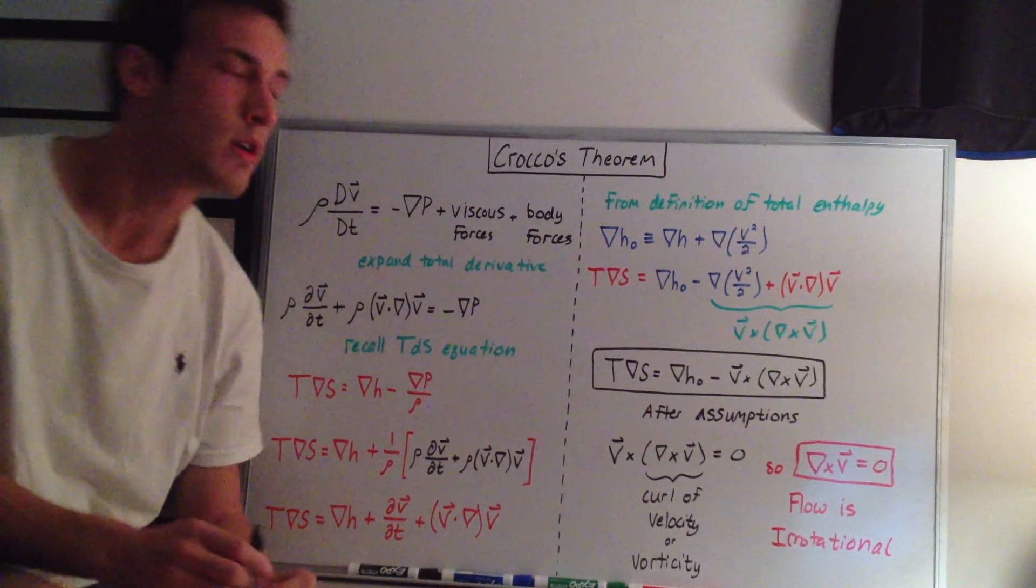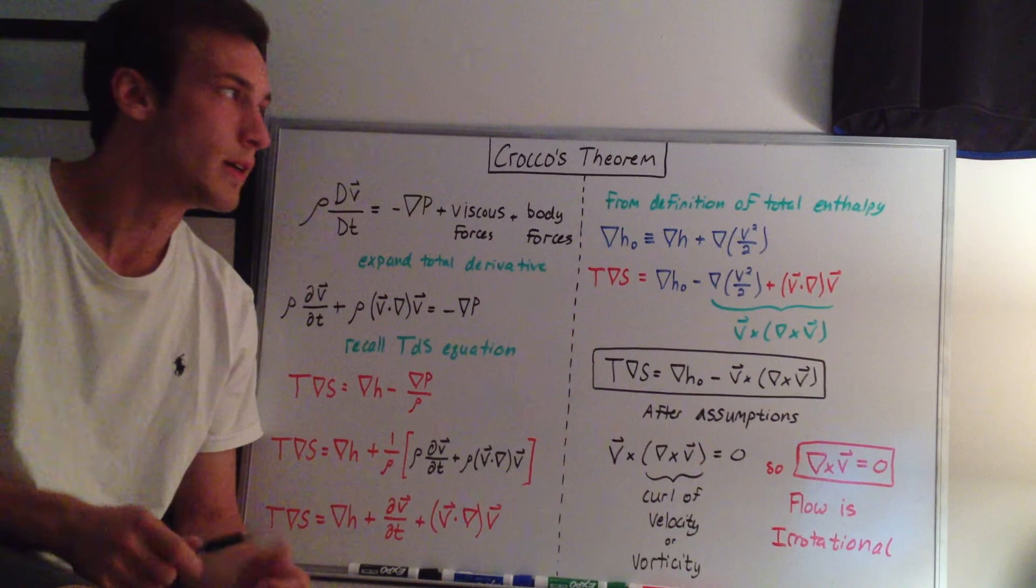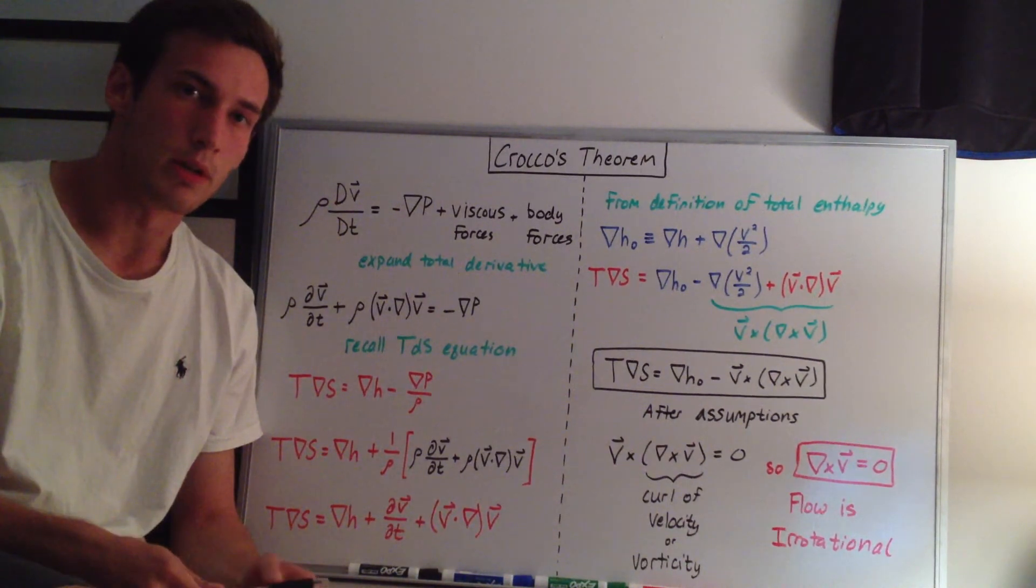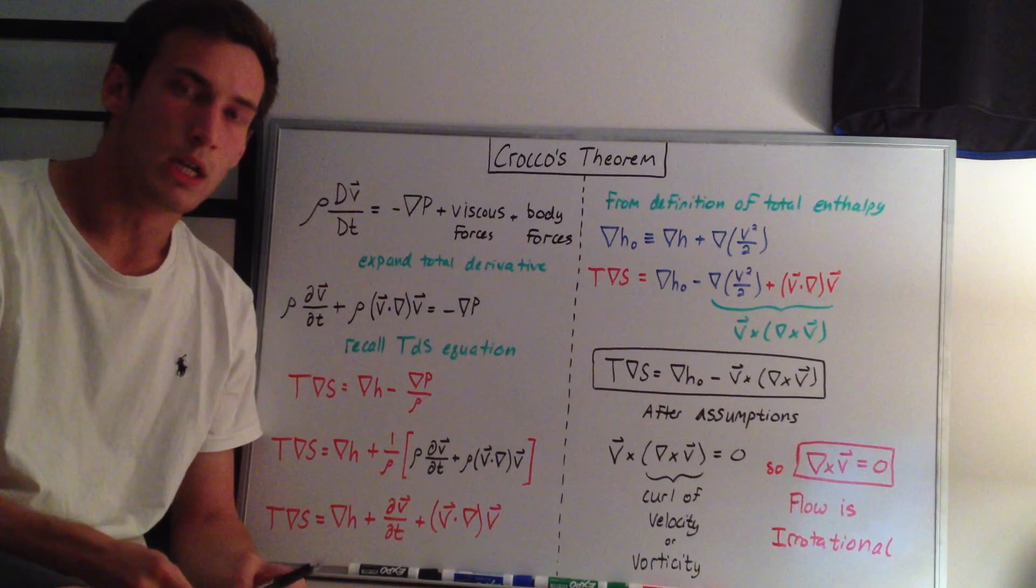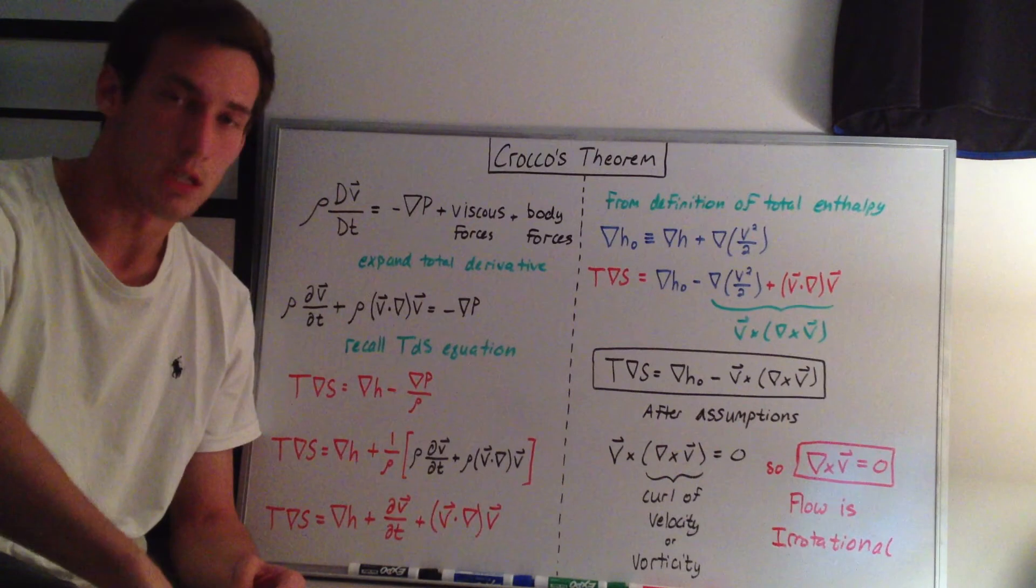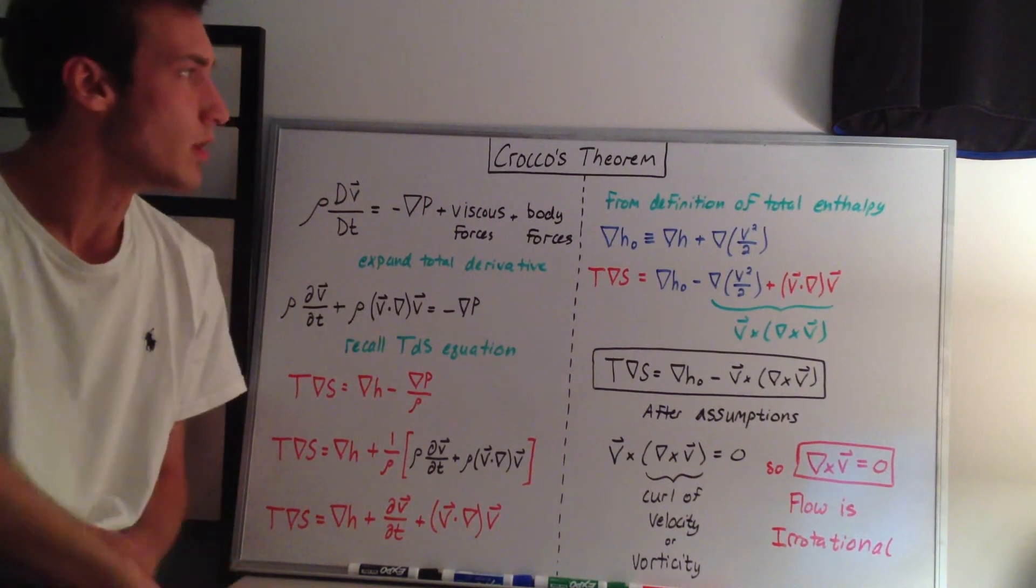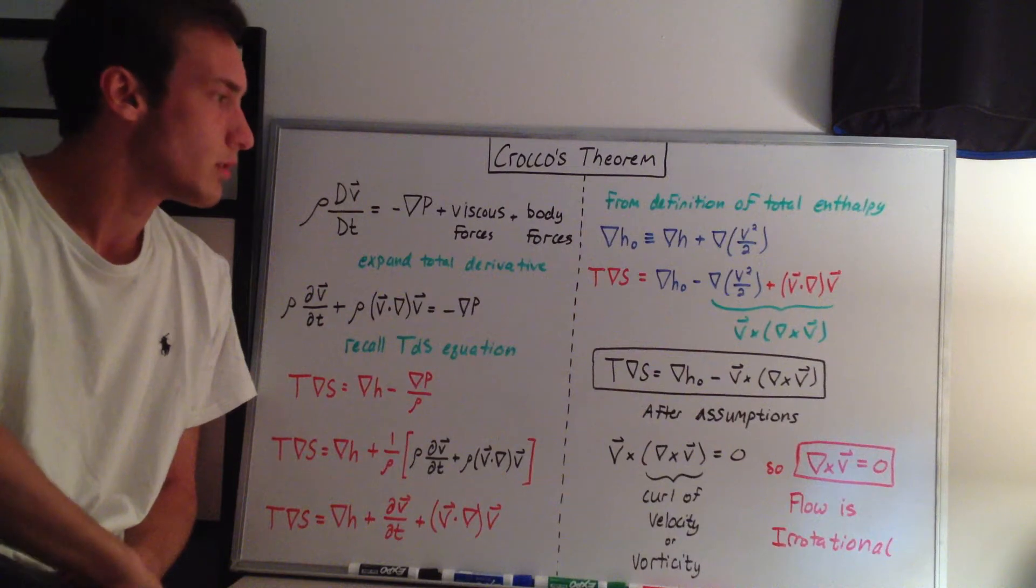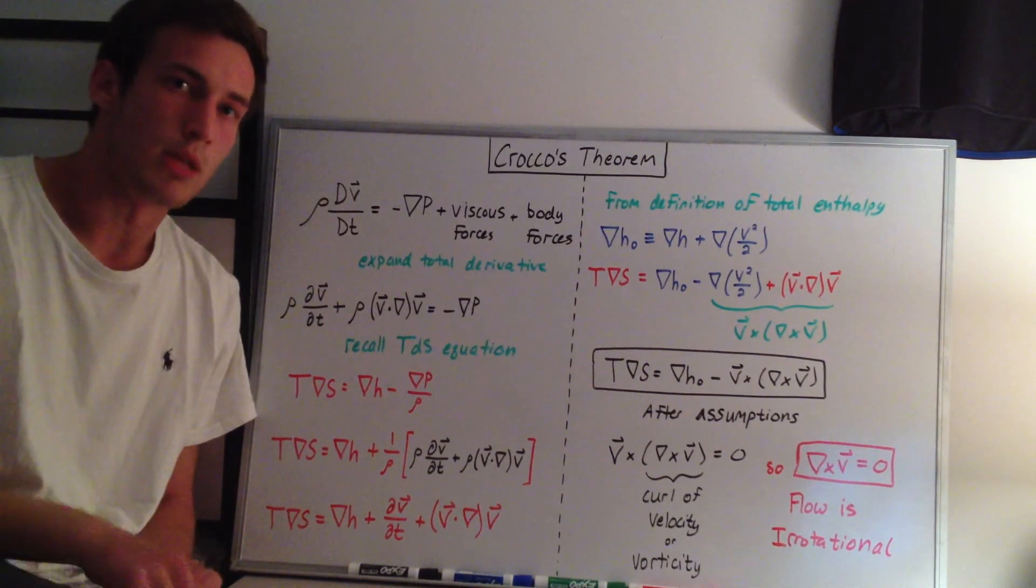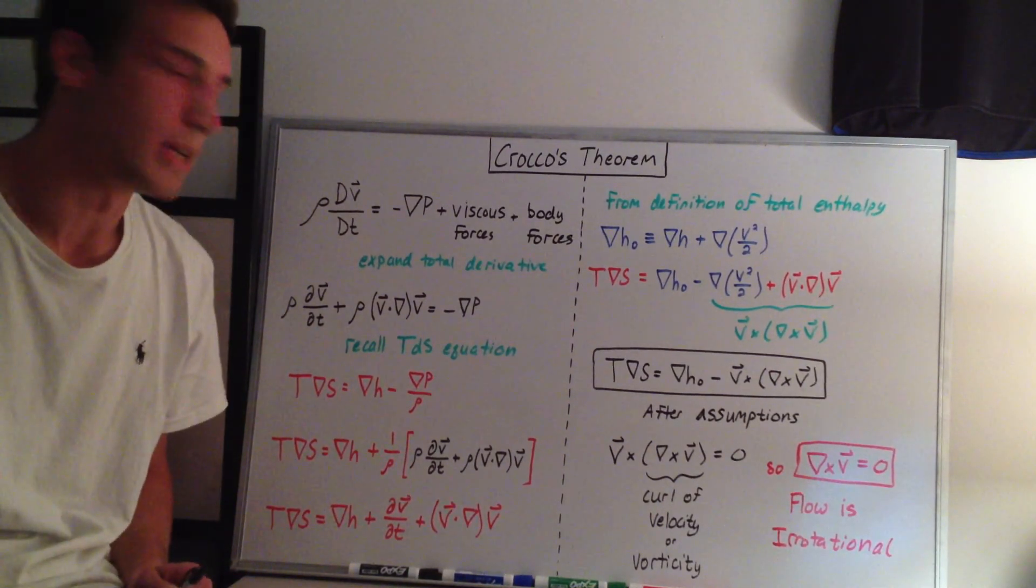Hey everyone. In this video, I'll be going through Krakos Theorem after all the other videos that I had put up leading up to this video. Krakos Theorem is important in the derivation of the Taylor-McCall flow because it gives the irrotationality condition of the flow. We'll see what that means at the end of this video. Krakos Theorem is essentially a combination of both the momentum and the energy equations for this type of flow based on the assumptions that we have.